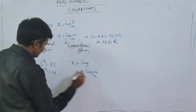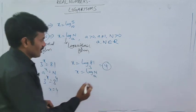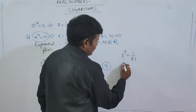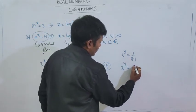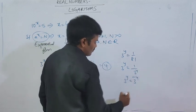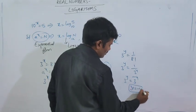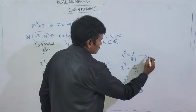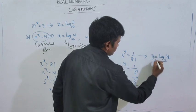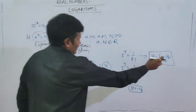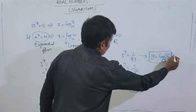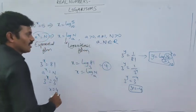Using the formula x equals log n to the base a, we get x equal to log 81 to the base 3. For another example, if 3 to the power y is equal to 1 by 81, we write 1 by 81 as 3 to the power of minus 4, so y equals minus 4. In logarithmic form: y is equal to log of 1 by 81 to the base 3. Here 1 by 81 is n, the base is a, with n greater than 0 and a greater than 0 and not equal to 1.